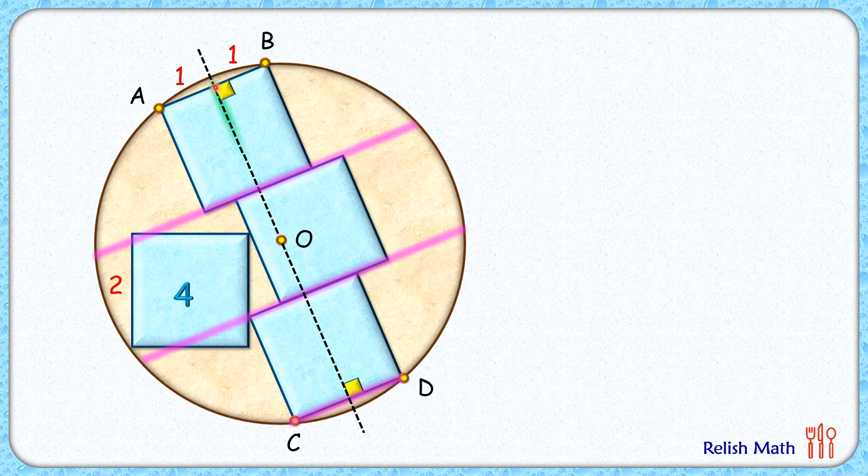What's the distance between AB and CD which are parallel to each other? That's represented by this green line, which is nothing but two plus two plus two, or six centimeter. And this red line is half of it and thus it will be three centimeter.